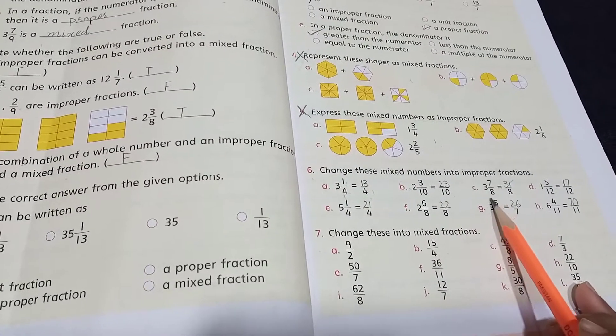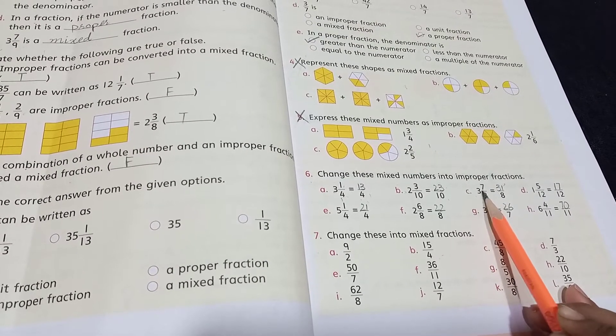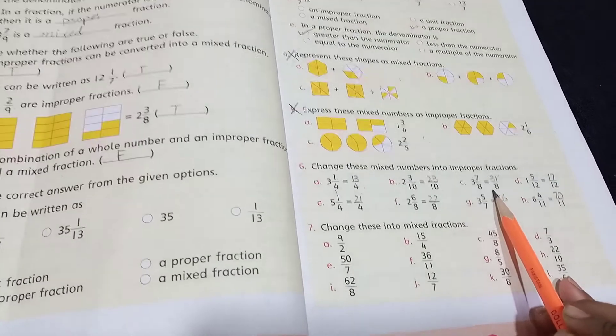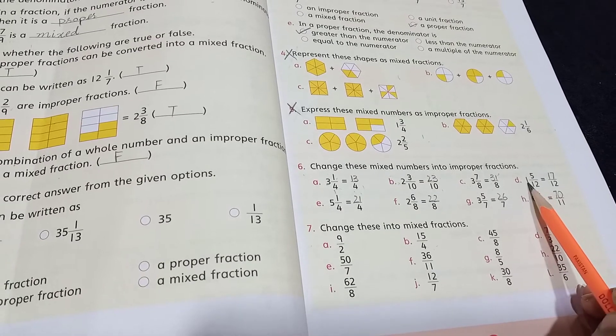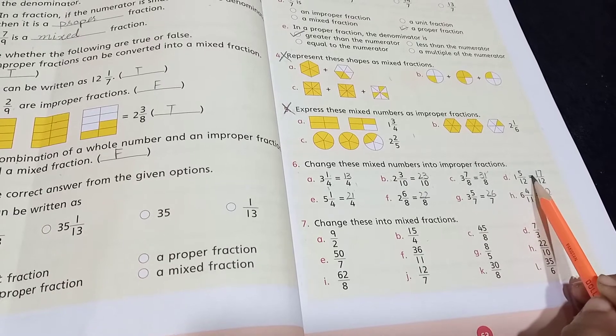Then 8 times 3 are 24. We will add 7, so the answer will be 31 by 8. 12 times 1 are 12. We will add 5, so the answer will be 17 by 12.